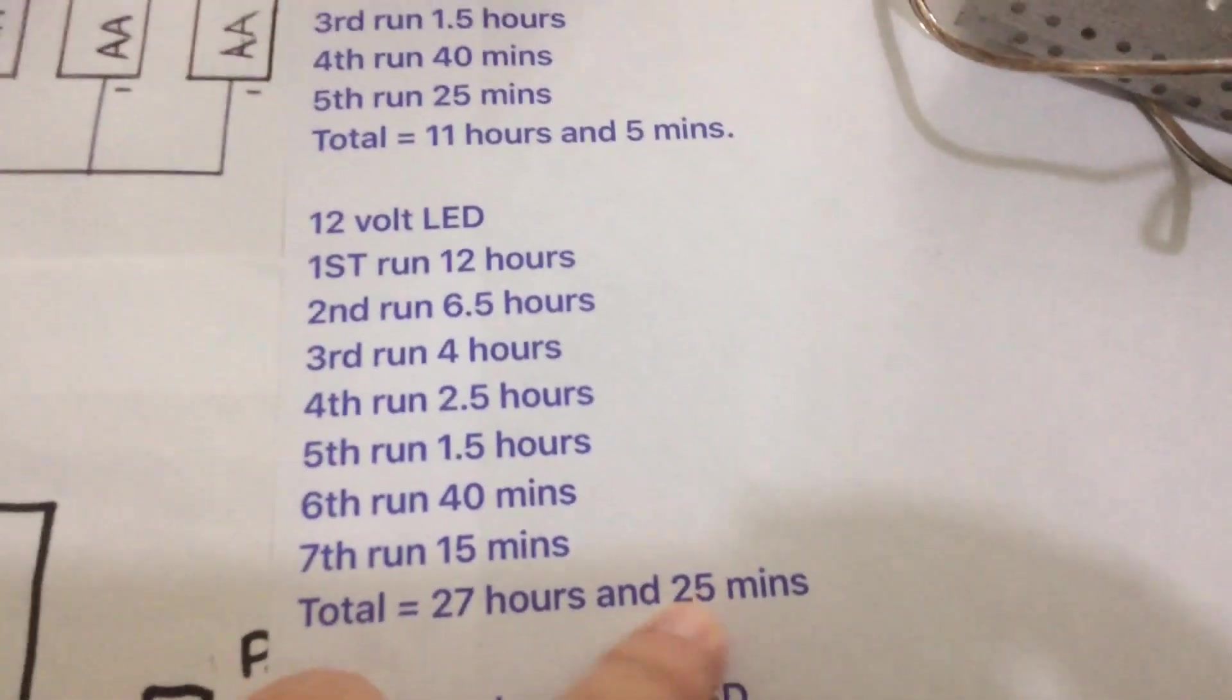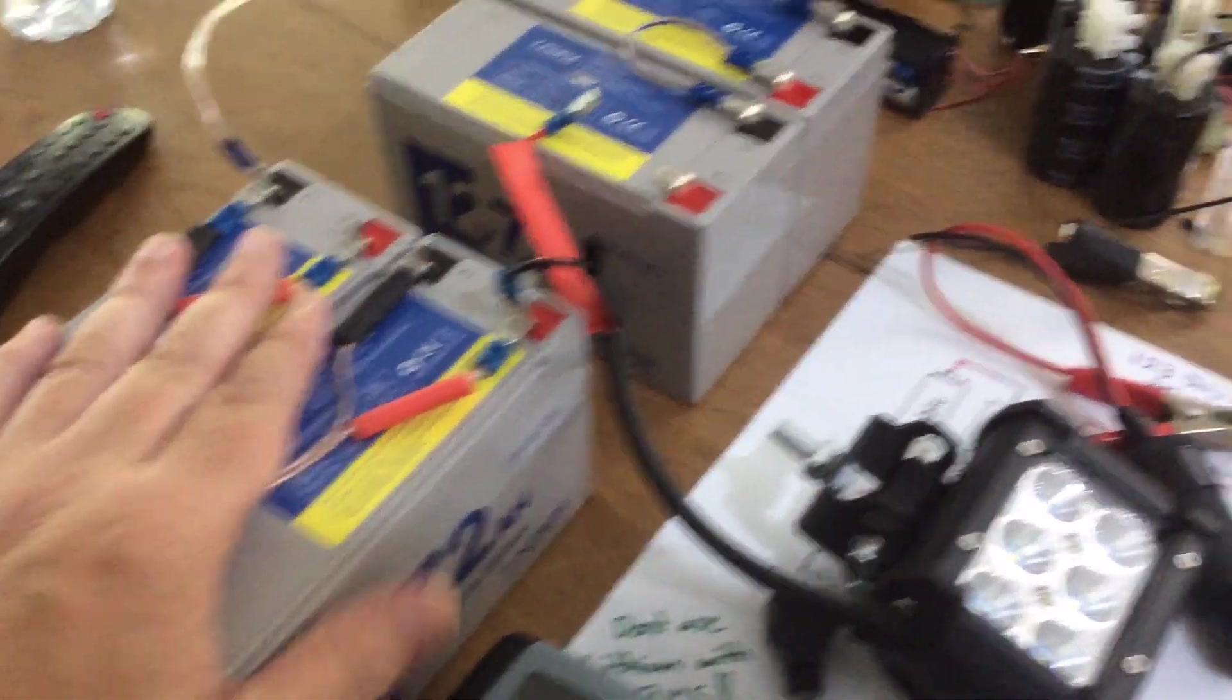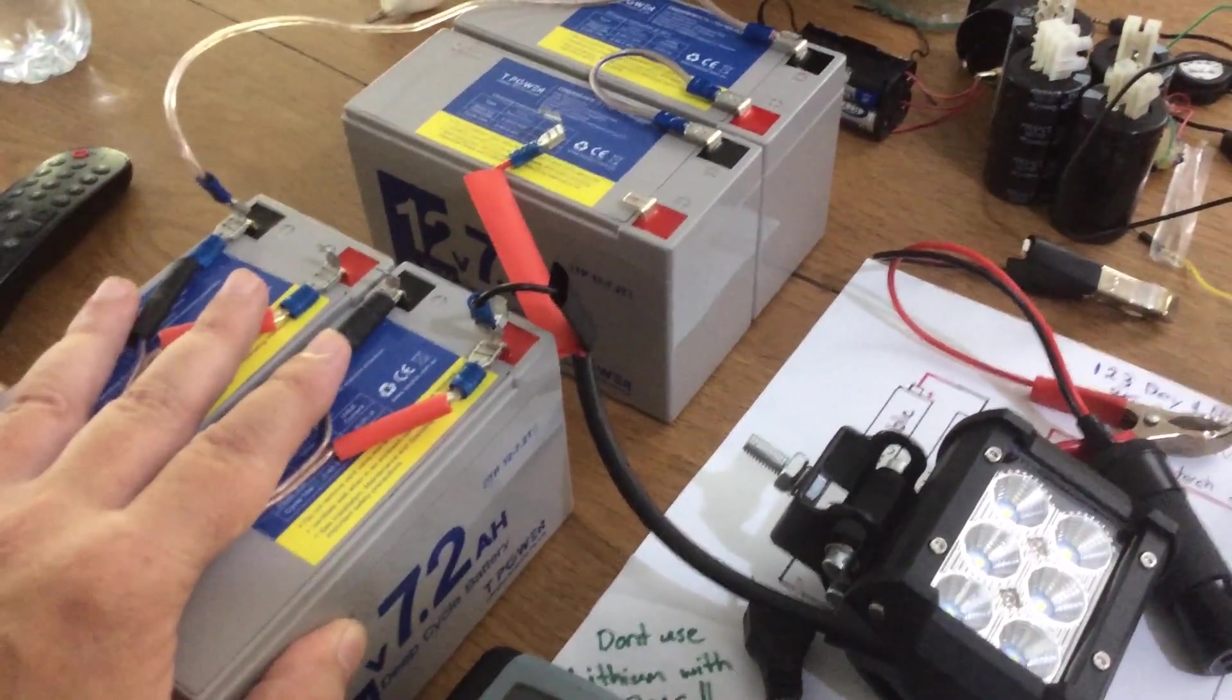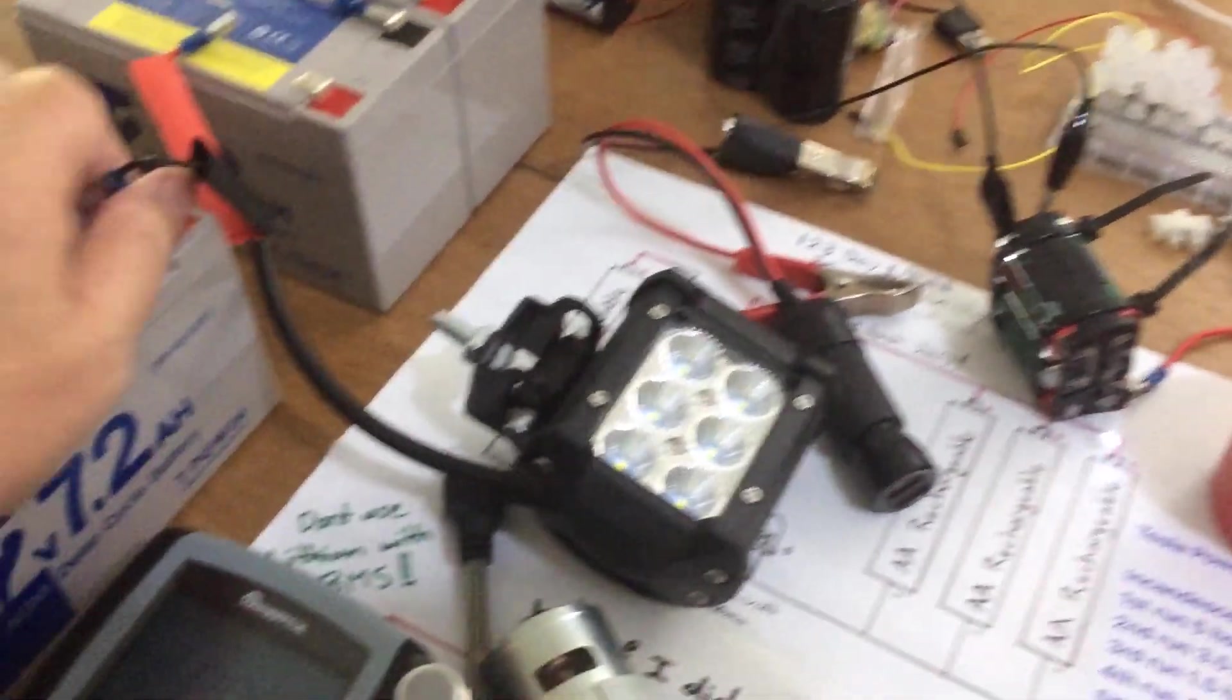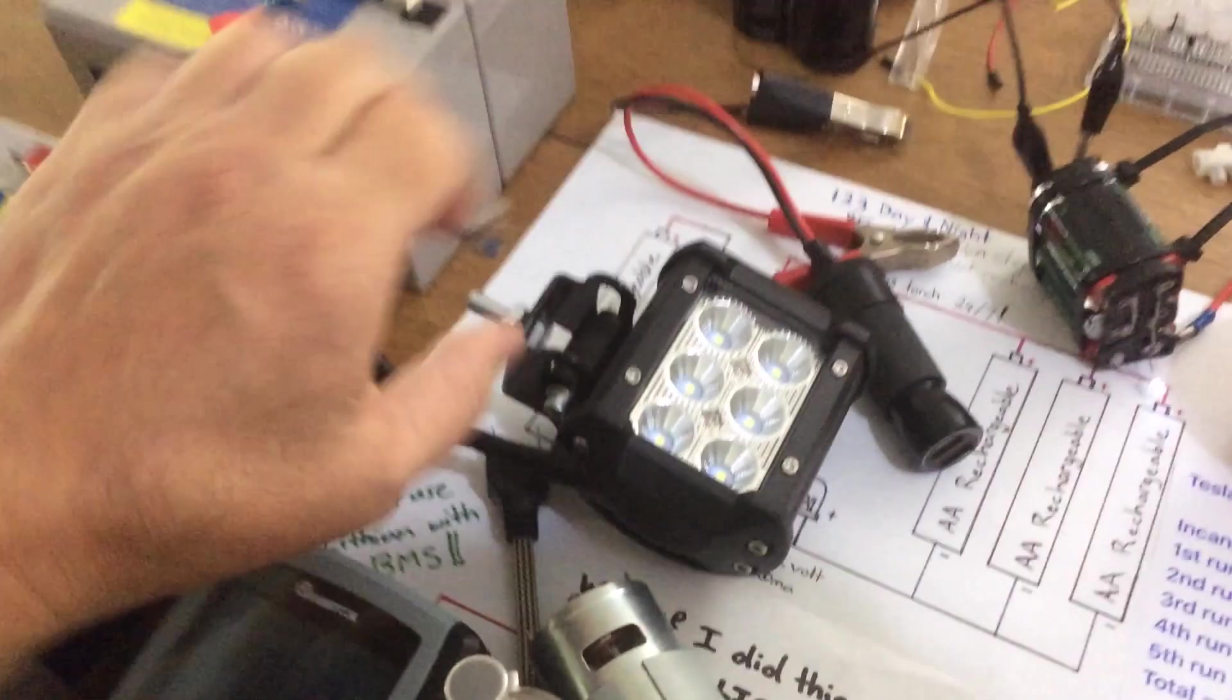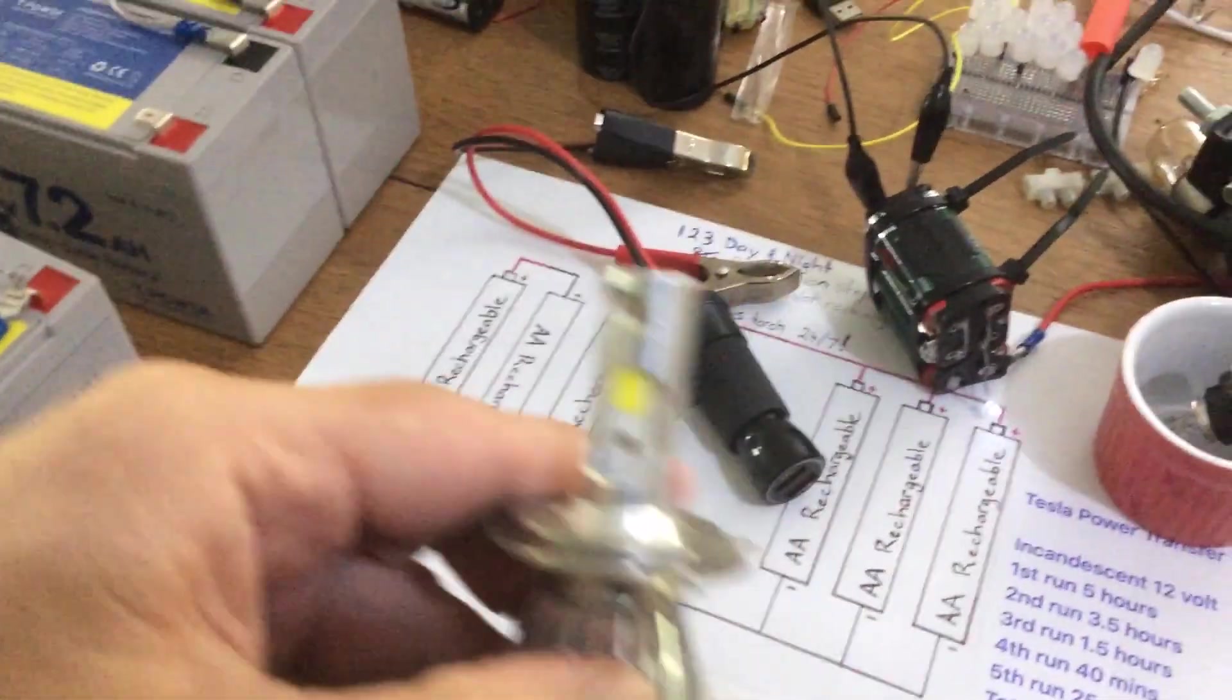Batteries were rotated, then we get 6.5 hours, 4 hours, 2.5, so we're looking at a total of 27 hours and 25 minutes for this light before one set of batteries gets recharged. You don't recharge both sets - you charge one set only. One set has to be empty and one set has to be full before you want to start that procedure. 27 hours 25 minutes for that bright LED. Again, better than the incandescent bulb.